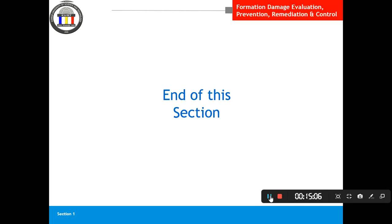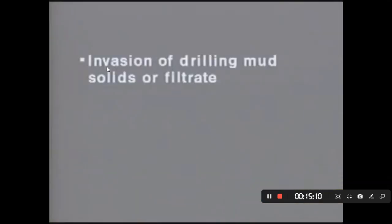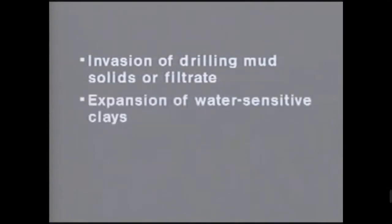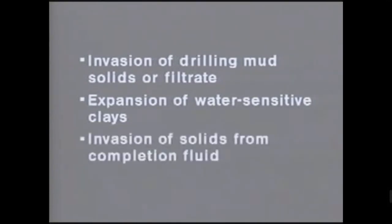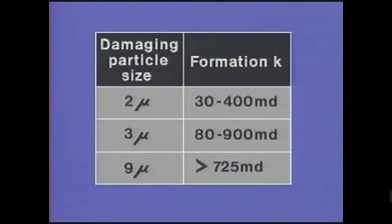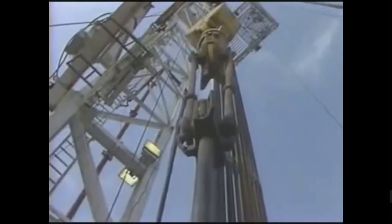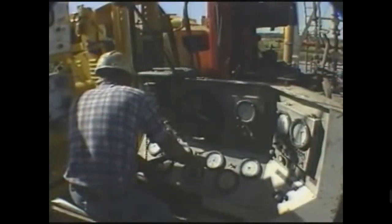Formation damage causes include invasion of drilling mud solids or filtrate into the formation, expansion of water-sensitive native clays, and invasion of solids from completion fluids. Research has shown that solid particles carried into the formation pores are the main cause of permeability impairment. This impairment depends on the size of the particles and the permeability of the formation. Shallow invasion occurs when particle diameter is roughly 10 to 30 percent of the mean pore diameter. Higher permeability reservoirs are easier to damage because fluid losses can carry solids deeper.